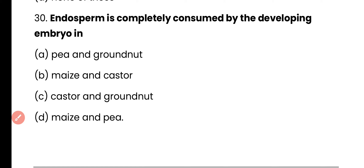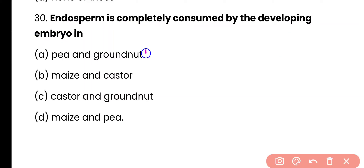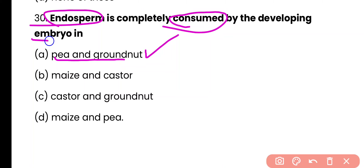Question 30. Endosperm is completely consumed by the developing embryo in: pea and groundnut, maize and castor, castor and groundnut, or maize and pea? The correct answer is option A. In pea and groundnut, the endosperm is completely consumed by the developing embryo.